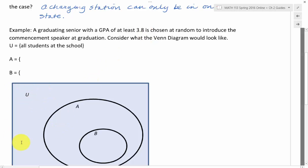So the universe, of course, is all the students at the school. Then set A is going to have to be the graduating seniors because only a graduating senior can give the commencement address.